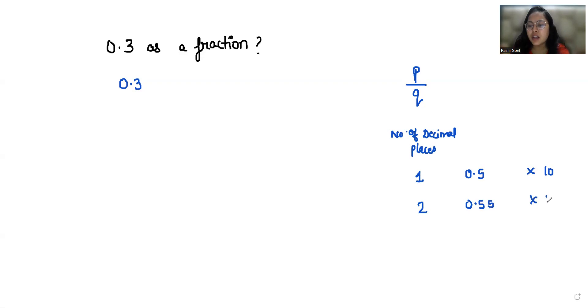There are 2 places after decimal then you have to multiply by 100. And if there are 3 digits after decimal then you have to multiply by 1000, and so on.